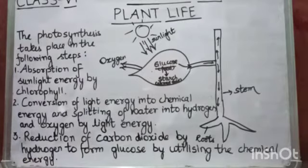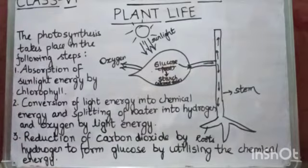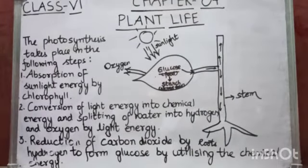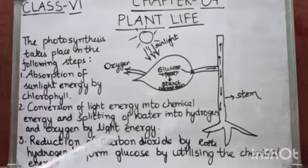And then splitting of water into hydrogen and oxygen by light energy. So water, which is H2O, it splits into hydrogen and then oxygen. And this oxygen is released into the air. Now the third step is reduction of carbon dioxide by hydrogen to form glucose. So during the process of photosynthesis, as you all know, carbon dioxide is taken in through stomata. So now this carbon dioxide is reduced. It means it is removed by hydrogen to form glucose. And what they use, they use chemical energy.